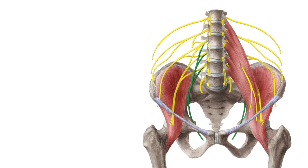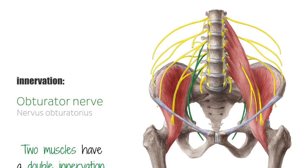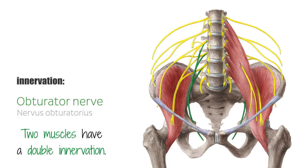The innervation is mainly supplied by the obturator nerve, which arises from the lumbar plexus and reaches the adductors through the obturator canal. Two muscles have a double innervation.